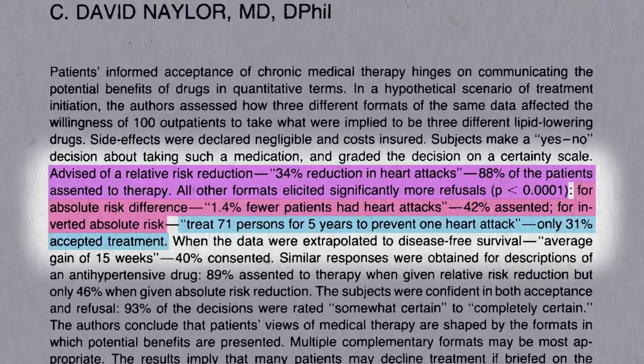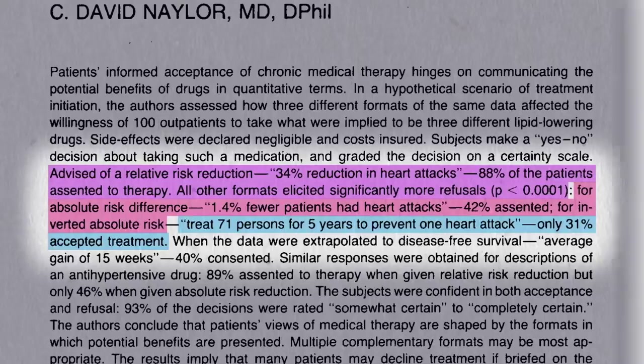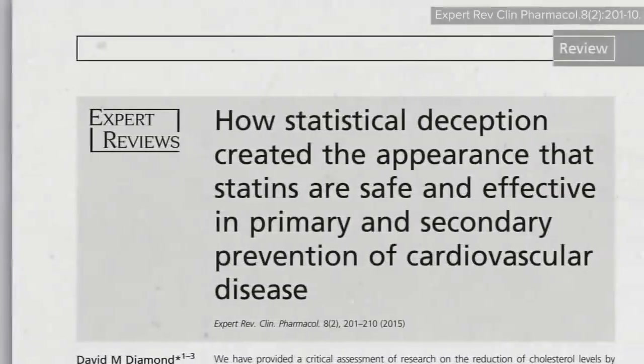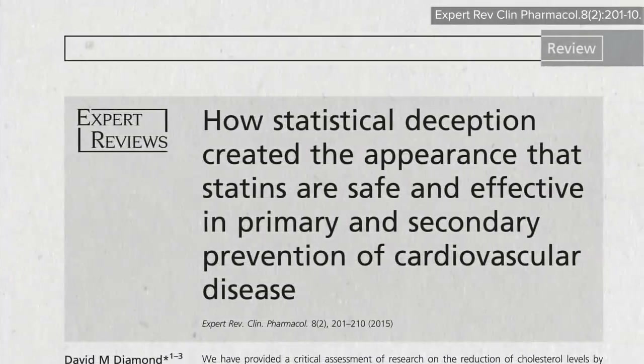So if you're a doctor and you really want the patient to take the drug, which statistic are you going to use? The use of relative risk stats to inflate the benefits and absolute risk stats to downplay any side effects has been referred to as statistical deception.